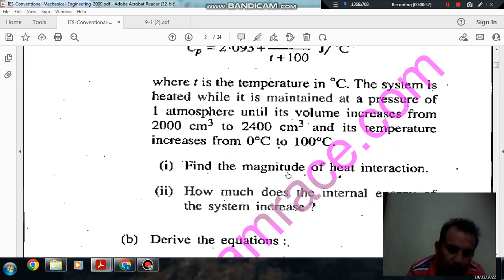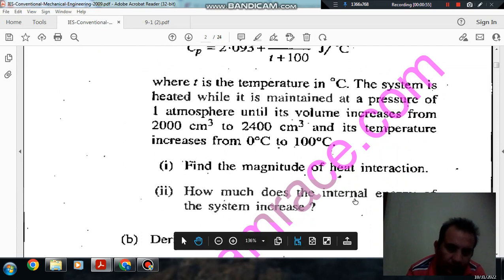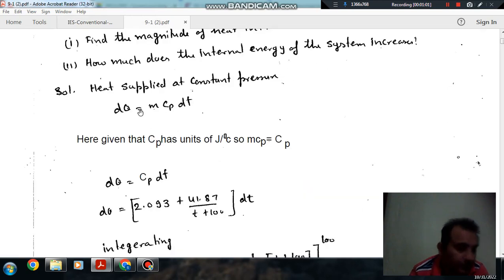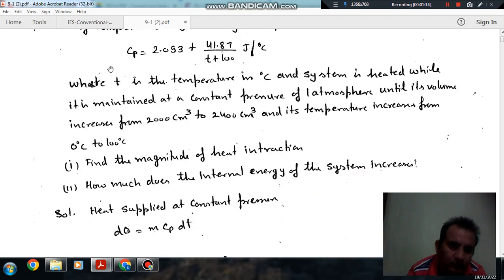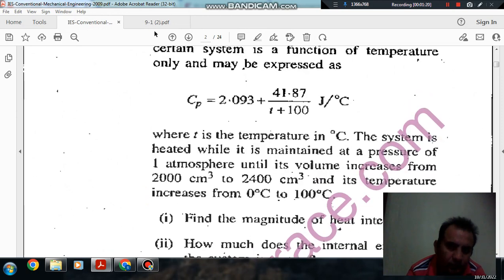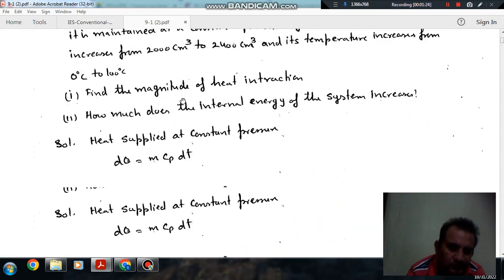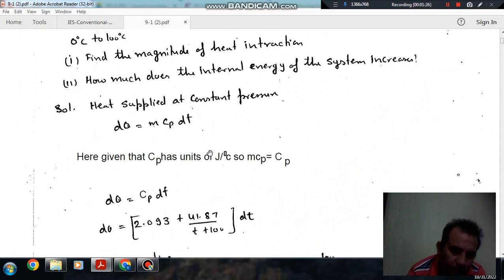Part 1: Find the magnitude of heat interaction. Part 2: How much does the internal energy of the system increase? So here it is given, we know that the heat supplied at constant pressure is m Cp dT, where m is mass and small cp is specific heat at constant pressure and dT is the temperature difference. Here it is given that heat capacity has units of joules per degree Celsius, so Cp equals m small cp.